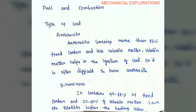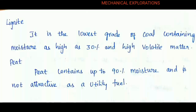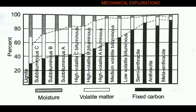Bituminous contains 46 to 80% of fixed carbon and 20 to 40% of volatile matter. Lower the volatility, higher the heating rate. Lignite is the lowest grade of coal, containing moisture as high as 30% and high volatile matter. Peat contains up to 90% of moisture and it is not attractive.